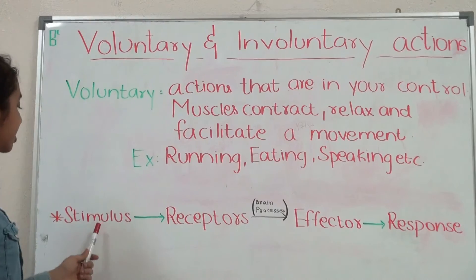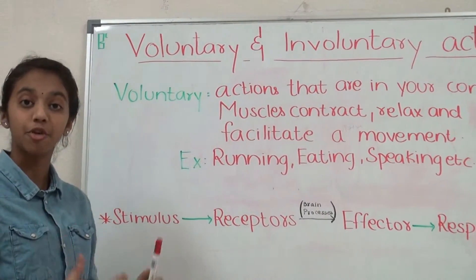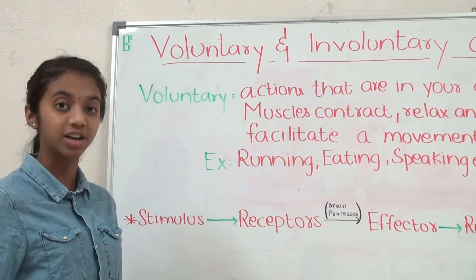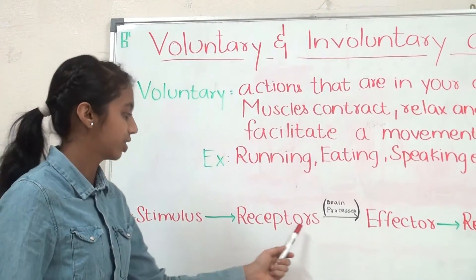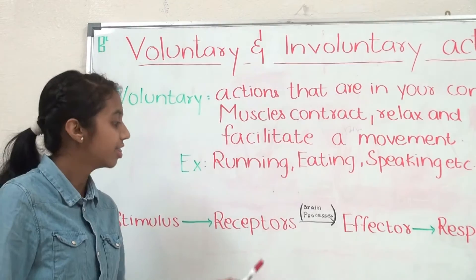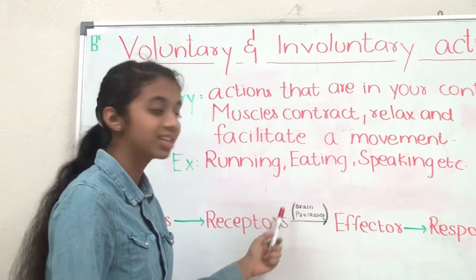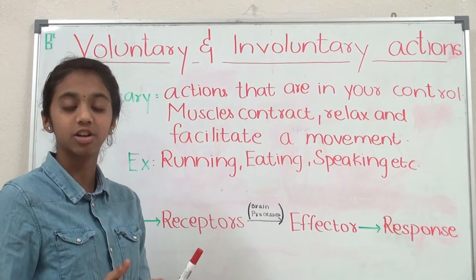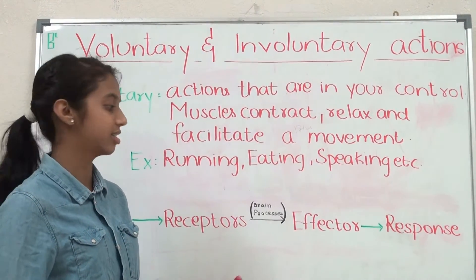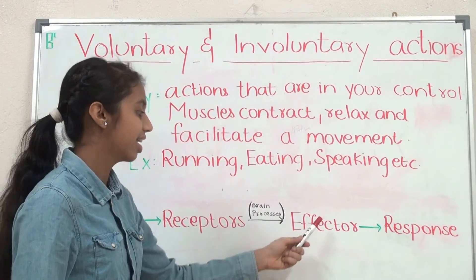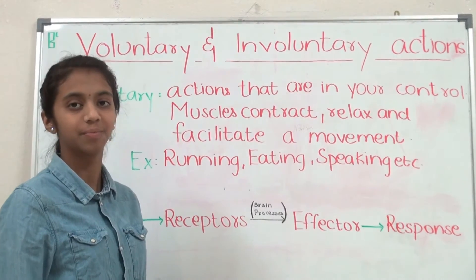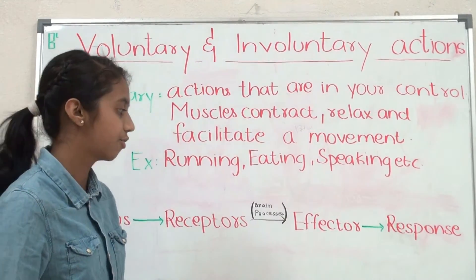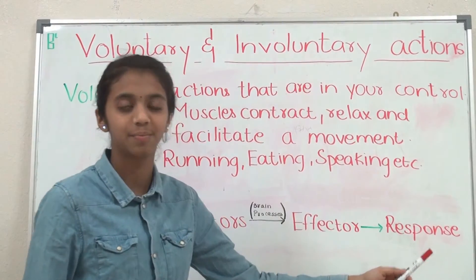How does this happen? First, the stimulus sends information directly to the brain or the spinal cord through receptors. Then, the brain processes this information and sends the signals as motor impulses to the specific effector and then to the muscle or gland for response.